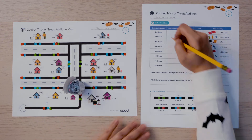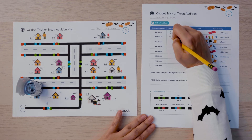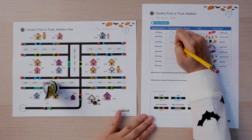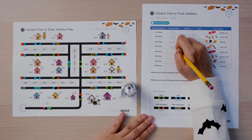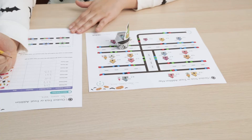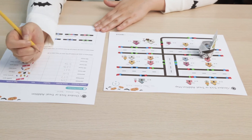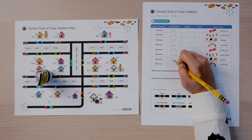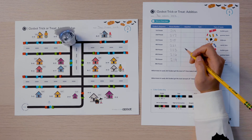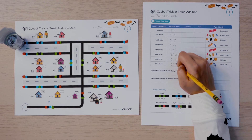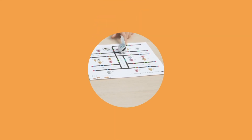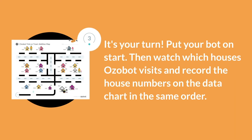First it passes house number 219, then 217, then 215, then 221, then 223, then 216, 214, and 224. It's your turn. Put your bot on start. Then watch which houses Ozobot visits and record the house numbers on the data chart in the same order.